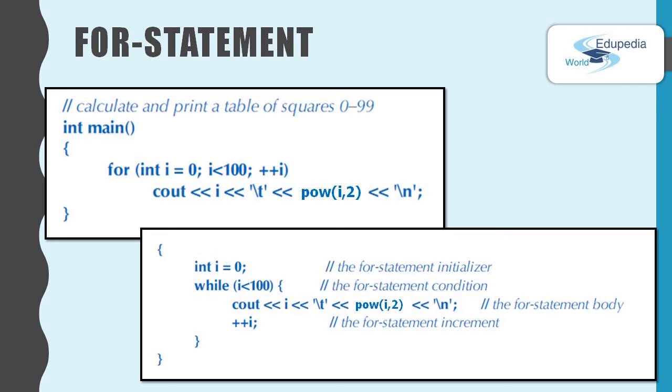The third part, plus plus i. And again goes to the second part. Check the condition. If it is true, goes to the code block. If it is not true, then go outside of the code block. So it is same like the while loop, no big difference.